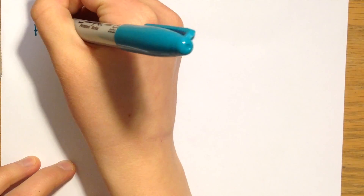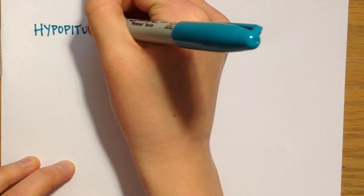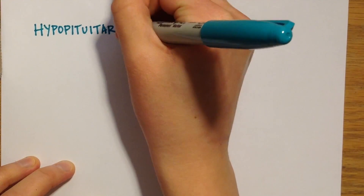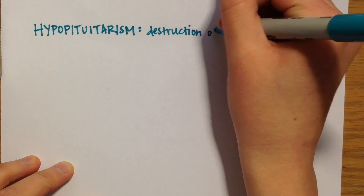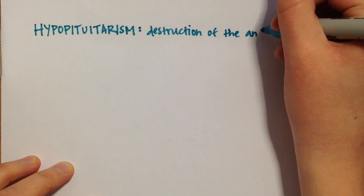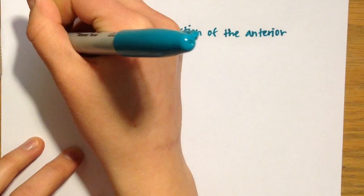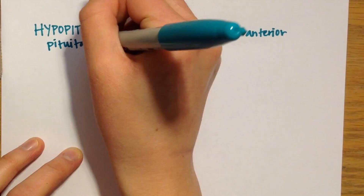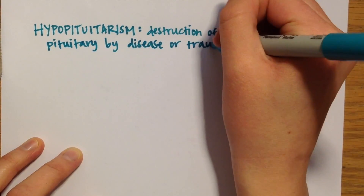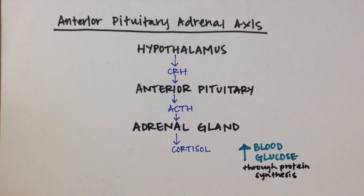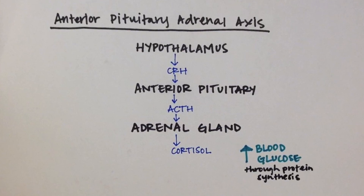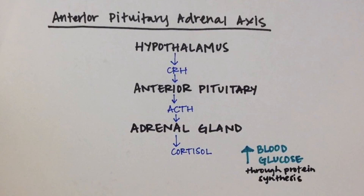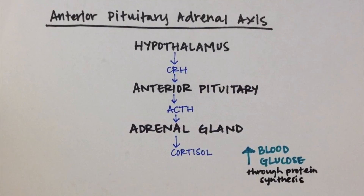Hypopituitarism is a disorder characterized by the destruction of the anterior pituitary by disease or trauma. In this case, ACTH is low. So what would the levels of cortisol, growth hormone, glucose, and insulin be? If ACTH is low, cortisol would also be low because its release would not be stimulated.